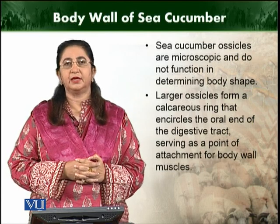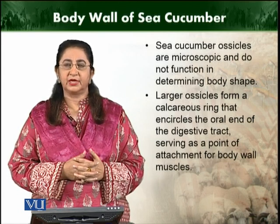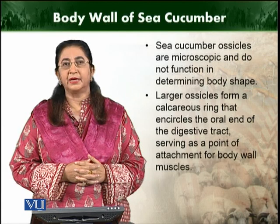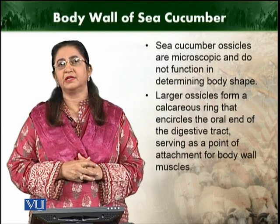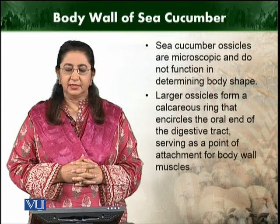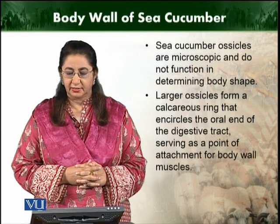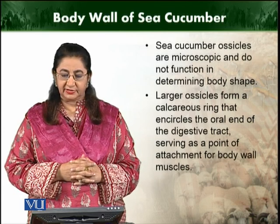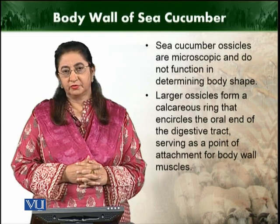The next layer is the muscular layer. The ossicles do not play any role in determining the body shape of the sea cucumbers. The larger ossicles will form the calcareous ring. The calcareous ring is made up of calcium carbonate, and it encircles the oral end of the digestive tract, serving as a point of attachment for the body wall muscles.